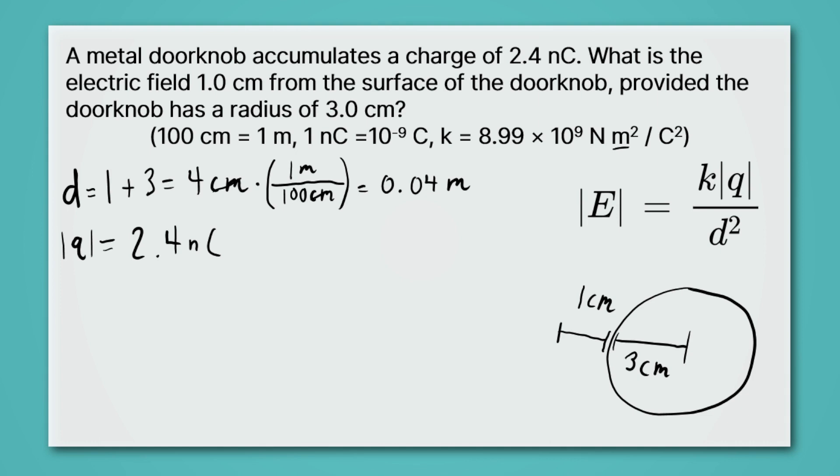Now nanocoulombs doesn't match the units in our coulomb constant, once again, which is coulombs. So we're going to need to get rid of the nanocoulombs, and go to coulombs. So we'll put nanocoulombs on the bottom, coulombs up top, and the nanocoulombs goes with one, and the coulombs go with ten to the minus nine, as indicated in our conversion factor. So nanocoulombs go away, and we get 2.4 times ten to the minus nine coulombs. And now we're ready to calculate the electric field.